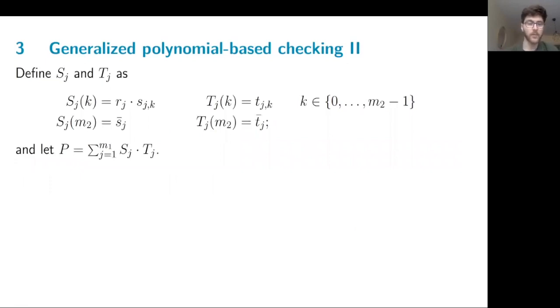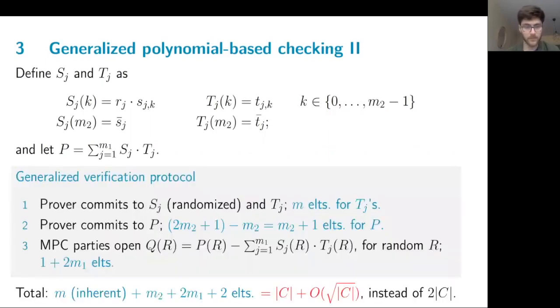To do this, we're going to define multiple S and T polynomials to match with the vectors I was just describing. But we're going to use a single P polynomial, which is going to be the sum of the products. Now we can directly lead to this generalized verification protocol. Now the commitments to the T polynomials are still going to cost M elements, but the commitment to the P polynomial is going to require M2, because its degree has changed. And when we open the polynomials evaluated at R, here we require more than before, because we're evaluating more polynomials. But when we sum it all up, we see that the total cost is equal to the size of the circuit plus some terms in the square root of the size, instead of twice the size. So for a high number of gates, this is significant.